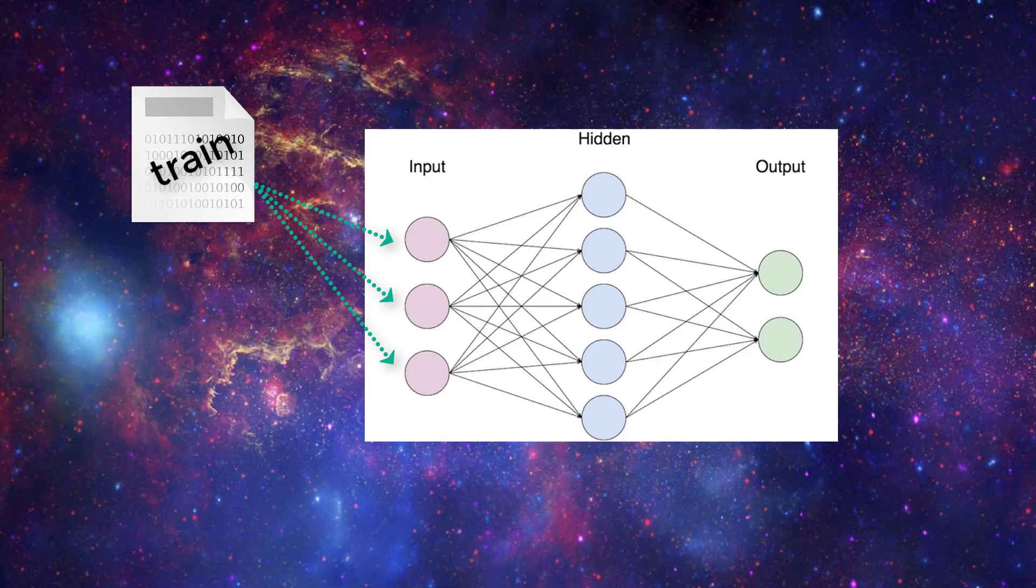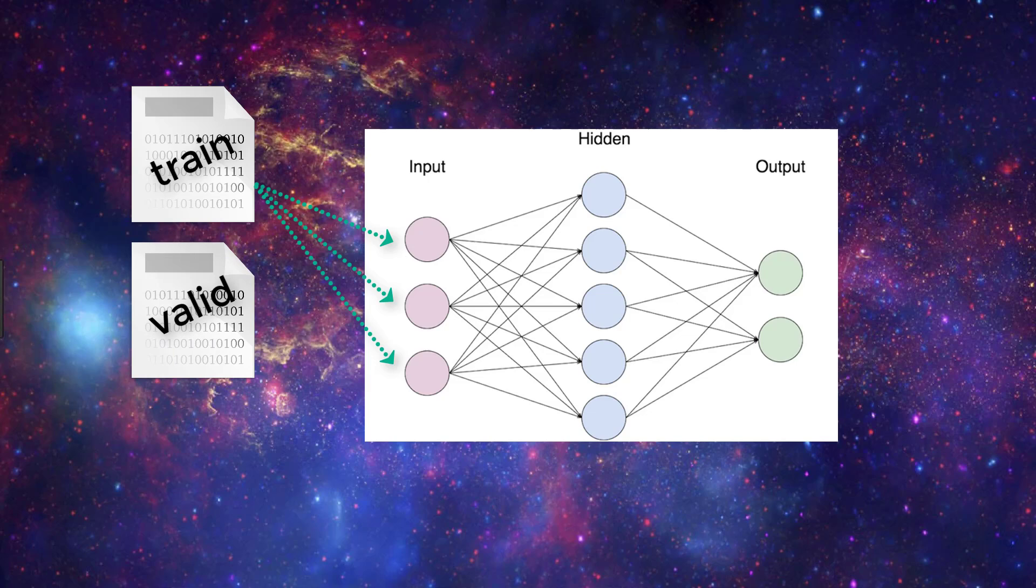Now let's discuss the validation set. The validation set is a set of data separate from the training set that is used to validate our model during training. This validation process helps give information that may assist us with adjusting our hyperparameters.